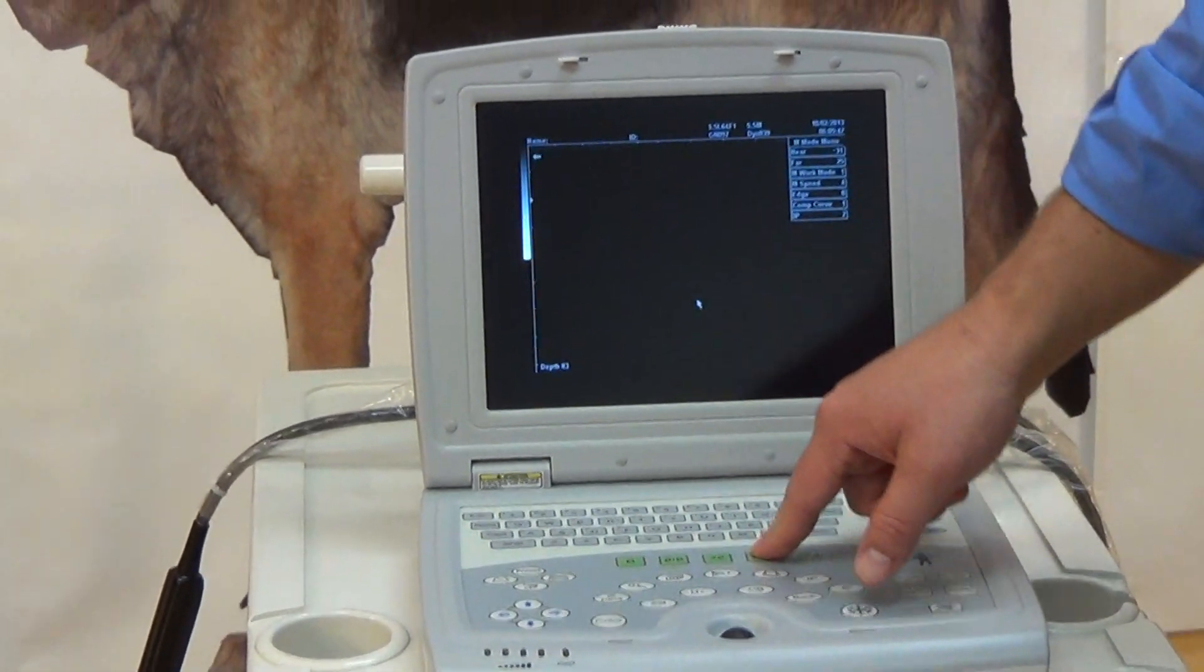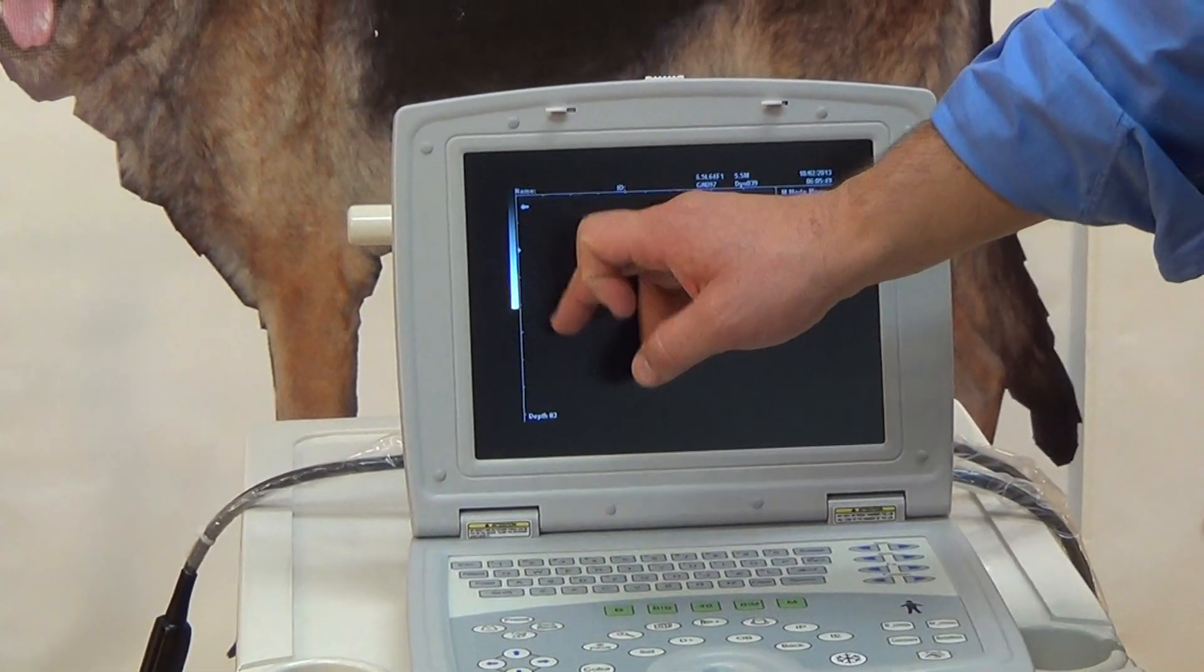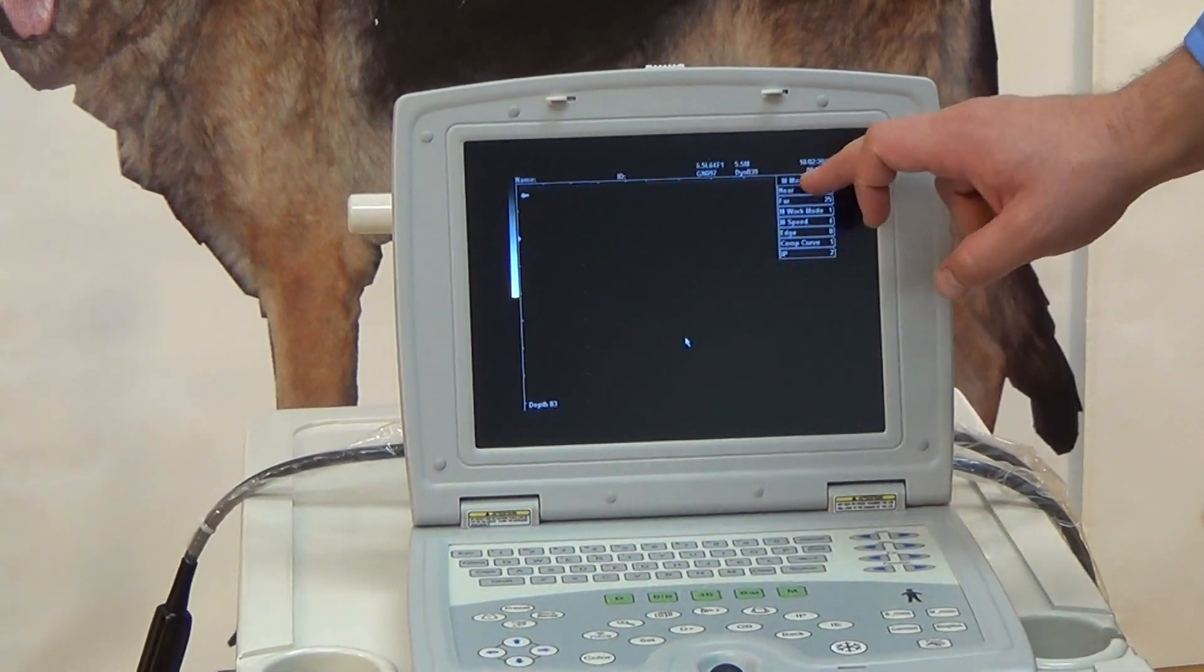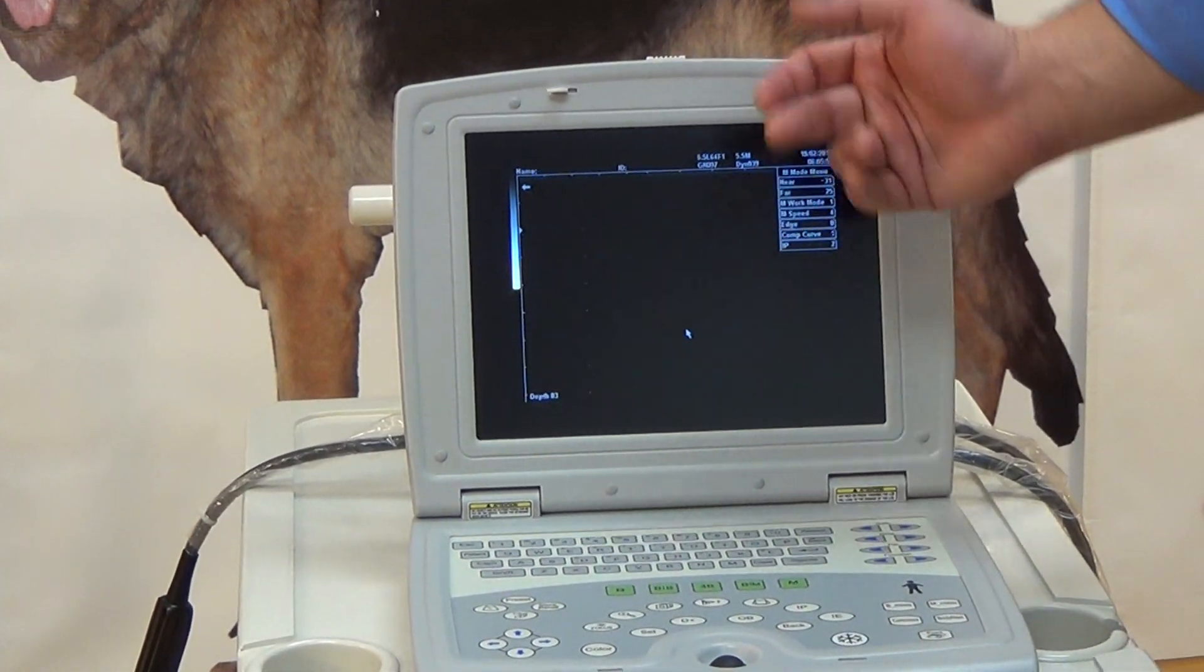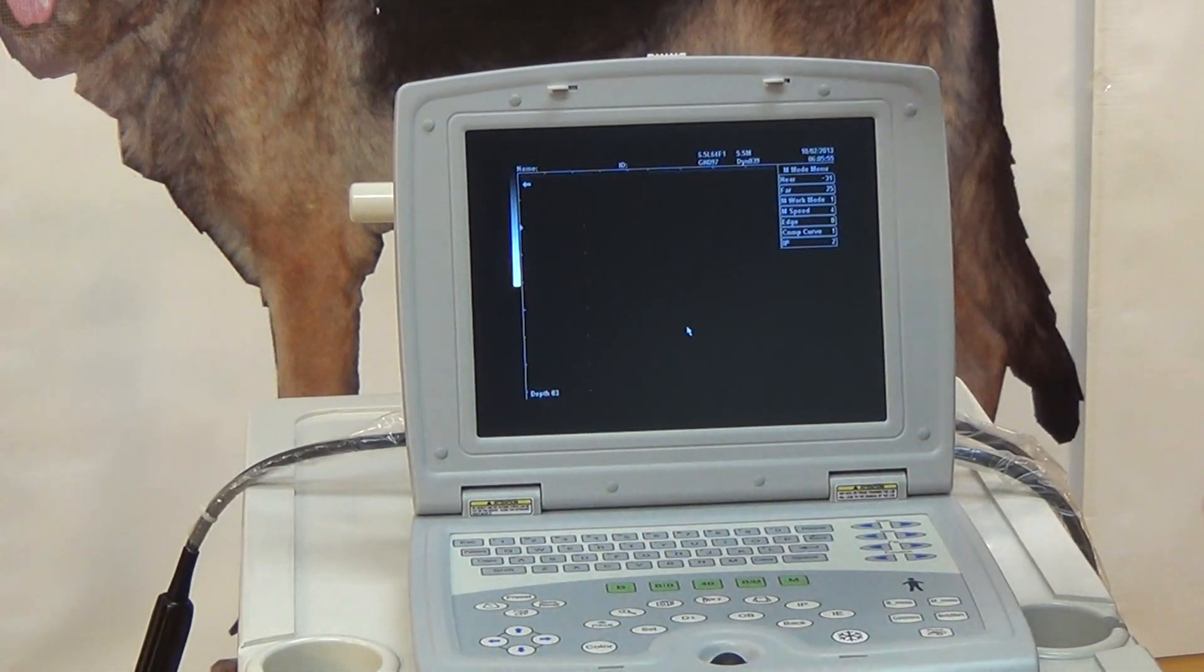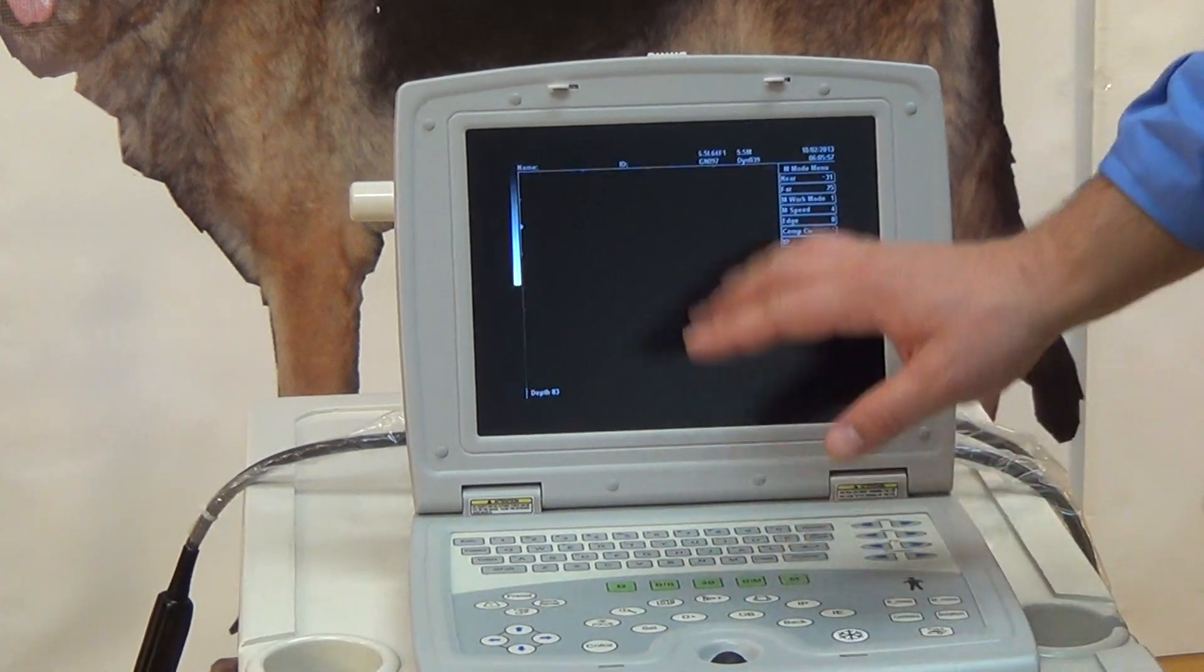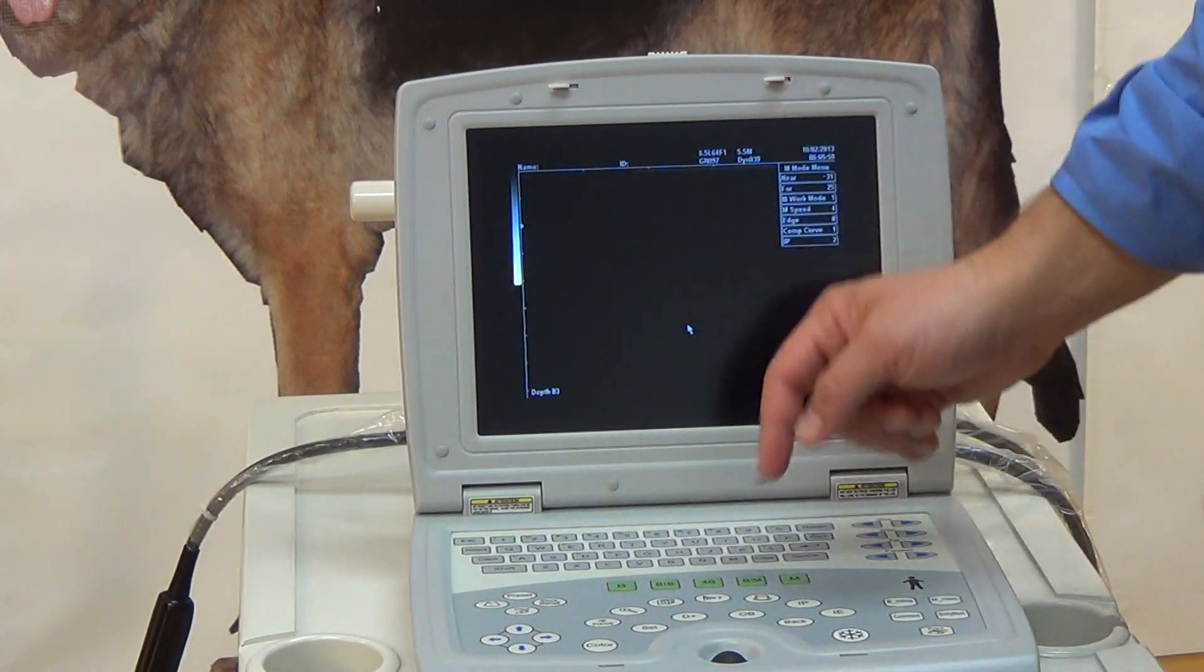Another setting is the B slash M mode. So this is good for measuring heart rate. You have your 2D image that you normally have, and on this side is the M mode. So you'll be measuring the heart rate while looking at it. Or if you don't want the dual, you can have just M mode for heart rate. Completely up to the user.